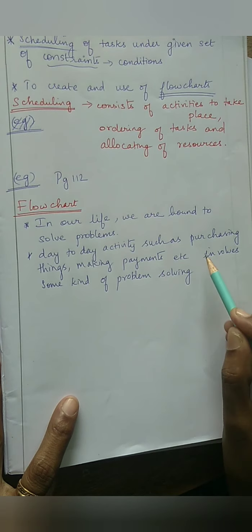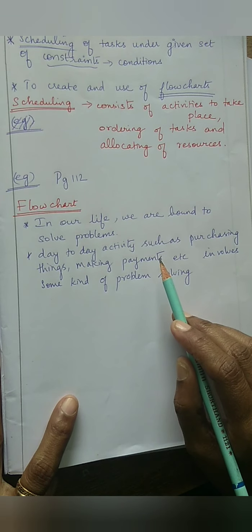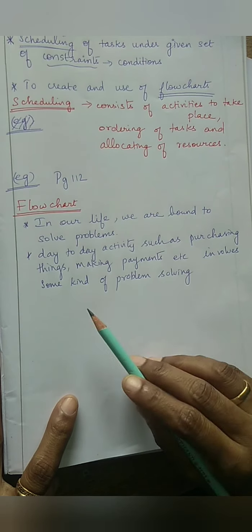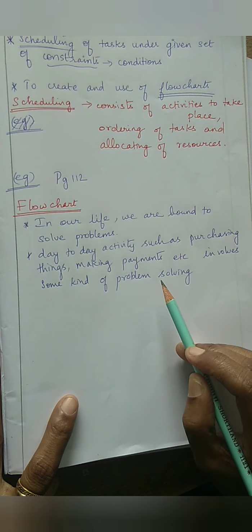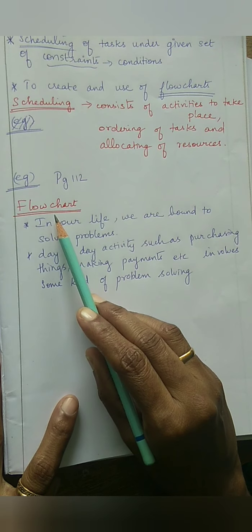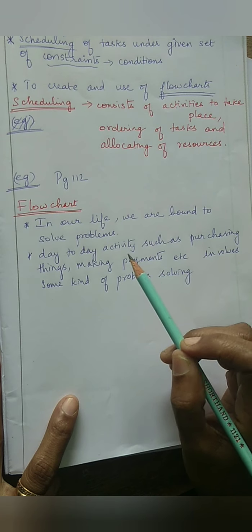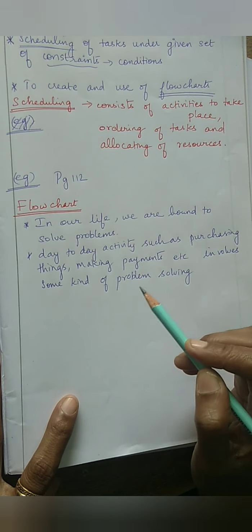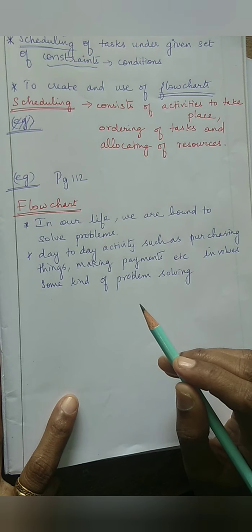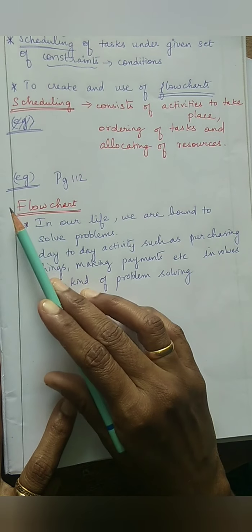Day-to-day activities such as purchasing things, making payments - whatever activity we do in our daily life - we have some kind of problem and that problem has to be solved. For any problem given, before solving it, I have to make a certain representation. In this concept, we are going to use a flowchart.